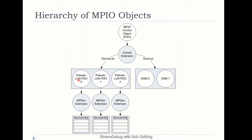In this example, we have three pseudo LUNs, which in turn will have three MPDEV extensions. All the MPDEV extensions will have all the paths associated with the LUN. We have two DSMs — DSM 0 and DSM 1. One could be the Microsoft generic DSM and another can be an OEM-provided DSM. During initialization, when a path is presented, each DSM is offered the path, and one DSM will claim it and be responsible for managing it along with MPIO.